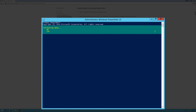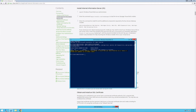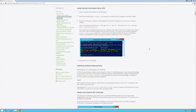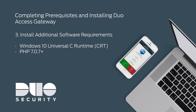This process may take a few minutes. You then need to install additional software requirements. The DAG installer will install the Visual C++ redistributable for Visual Studio 2015 package if it is not already present on your server. The Visual C++ package is dependent upon the Windows 10 Universal C runtime. Ensure that the Universal C runtime package is installed on your server before installing DAG. You can install the package through Windows Update or download it directly from Microsoft via the link in the DAG documentation.